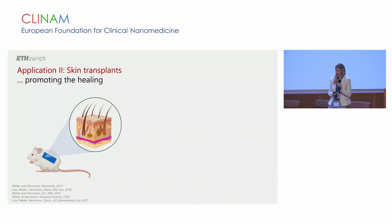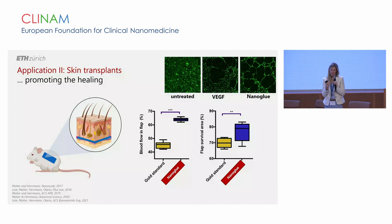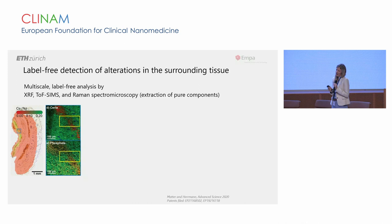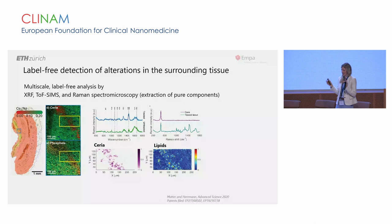We further looked at whether this also works in a more generalized model. We applied the same nanoparticle-based glue on a skin flap transplant model in a mouse. We can see that this glue enhances blood flow in the flap and survival of the flap, performing very comparable to VEGF in an endothelial tube formation assay. We can further track these particles by analytical methods such as XRF or Raman spectroscopy microscopy and confirm that these particles really end up in the macrophages.